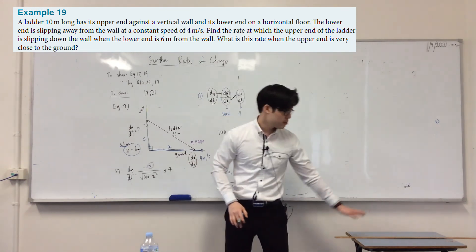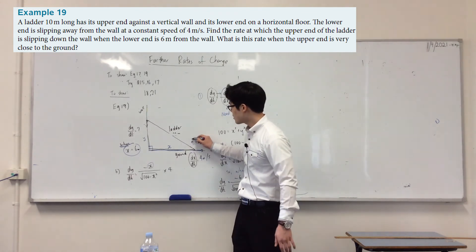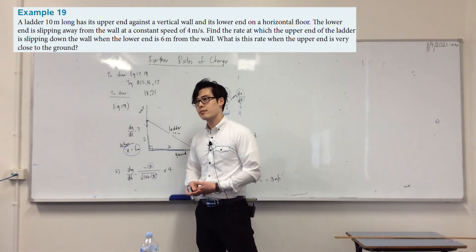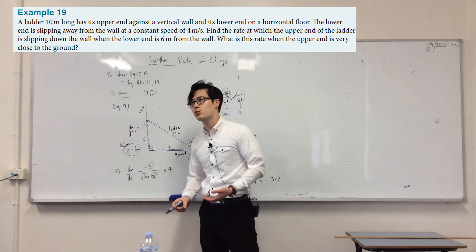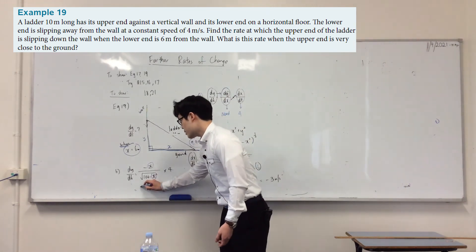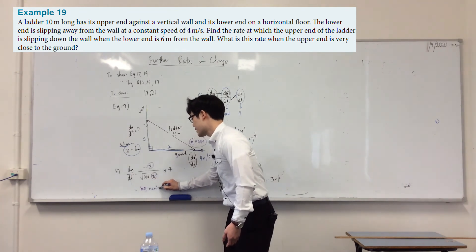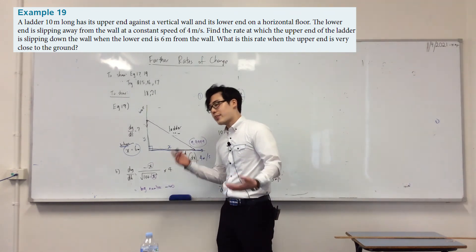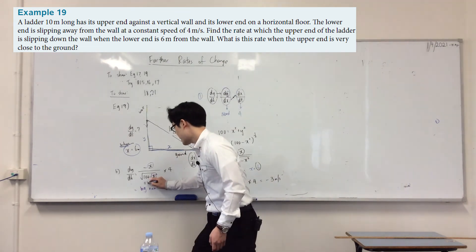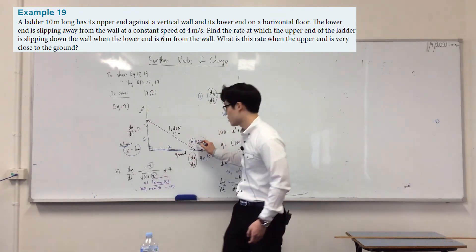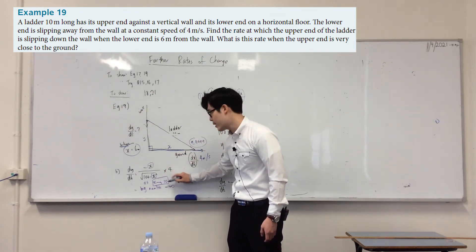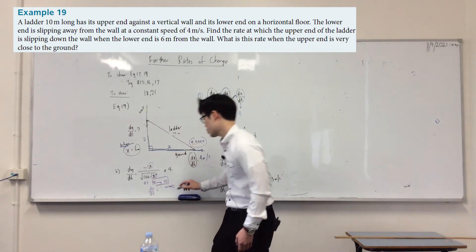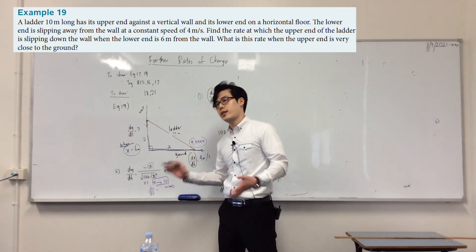When x is very close to 10, subbing that into the expression gives a really large number — something like minus 2400. Mathematically, you don't write 'big number' in the exam; you write negative infinity. So as x approaches 10, dy/dt approaches negative infinity. That proves the ladder falls increasingly fast as it approaches the ground.